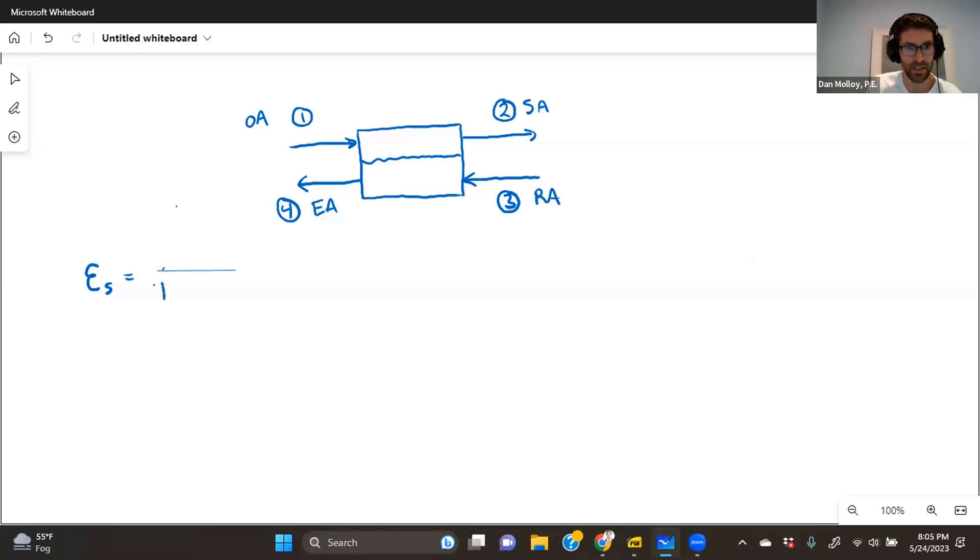So we could call that T3 minus T1. And then our numerator is what we actually get. What is the actual amount of heating that happens? We go from one to two. So we get some heating, but we probably don't get so much as to say we're going all the way to T3. So that'd be something like T2 minus T1, which is going to be less. And, you know, the largest this can ever be is 100%, but in most practical cases, it's going to be less than 100%. So that's the sensible effectiveness.